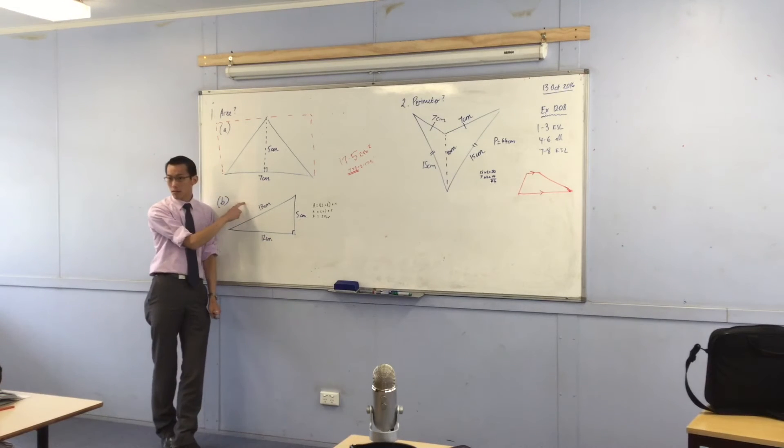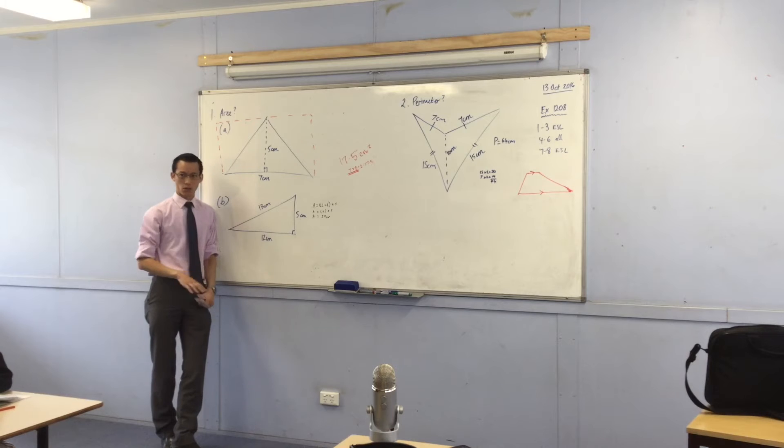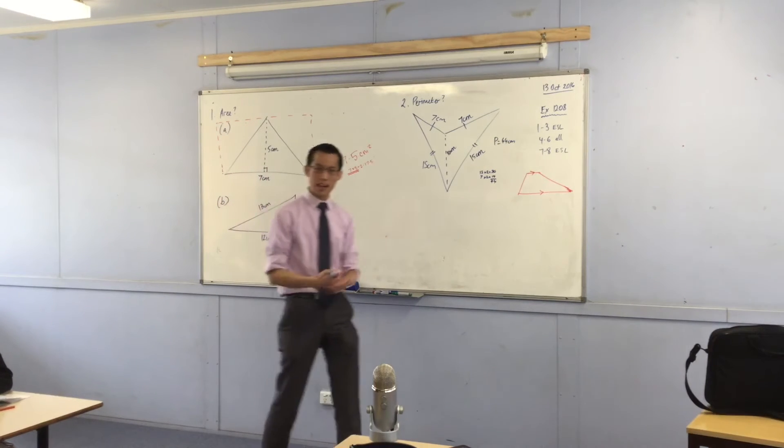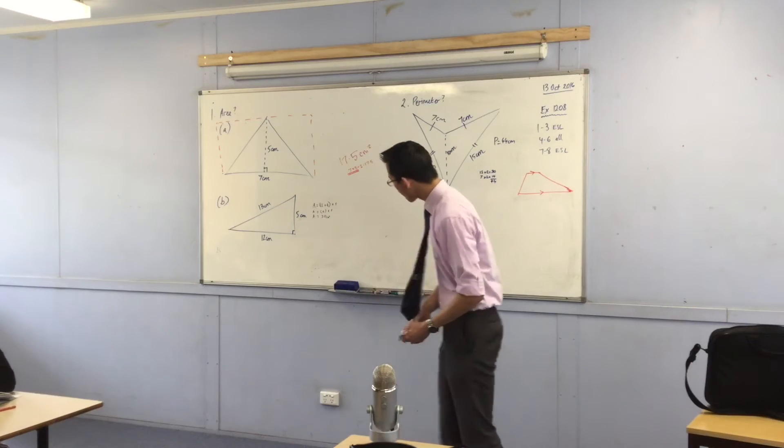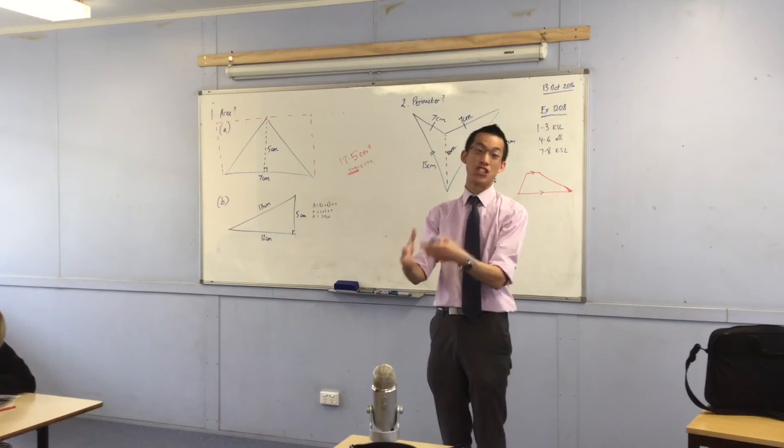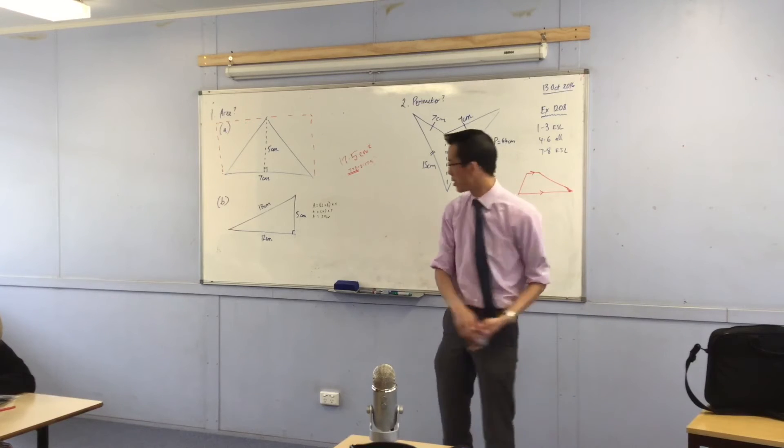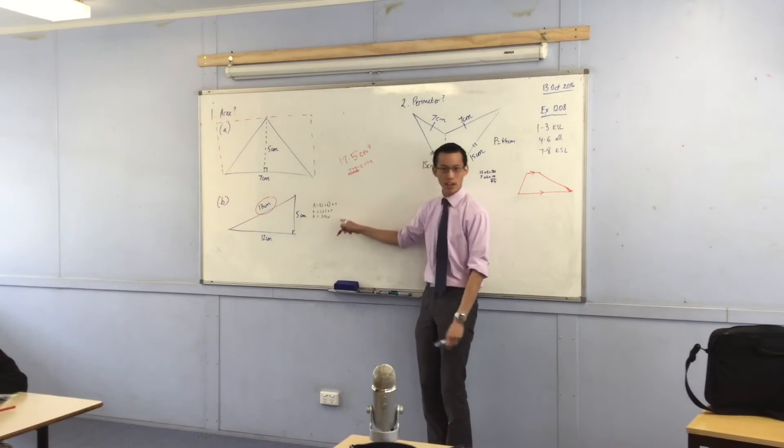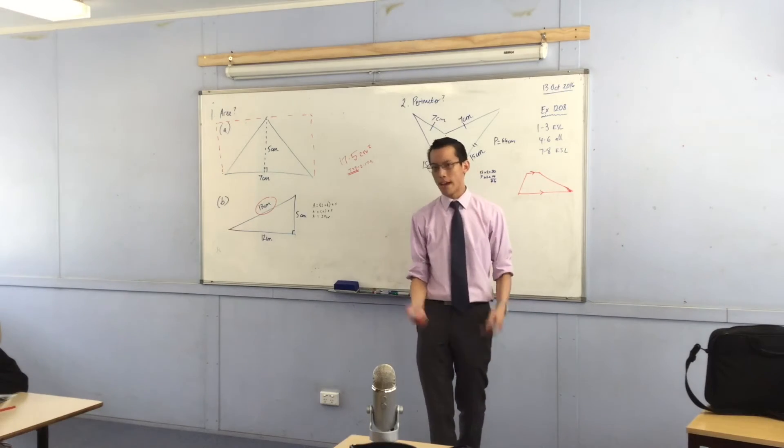This one here, this question has what we call a red herring in it, a bit of a false clue. You've got three numbers but clearly you don't need all three numbers, right. So actually what this question is doing is not just working out can you work out area, but can you work out which details are important and which ones aren't. This 13 doesn't get used in the calculation over here. Why not? Why is it irrelevant?